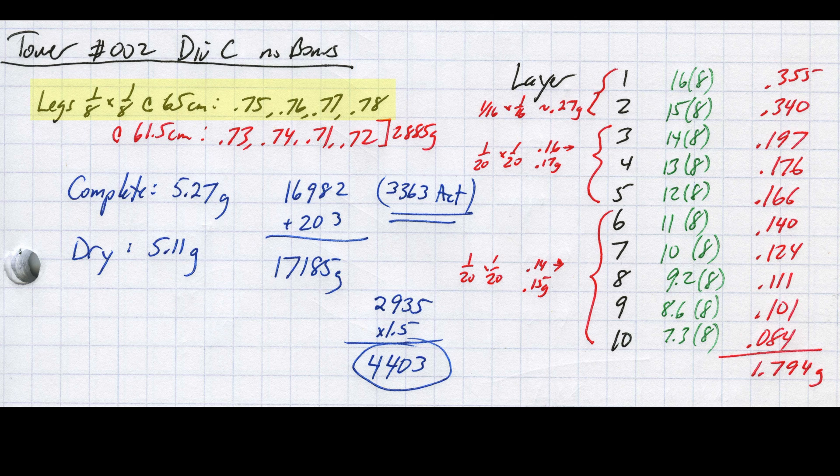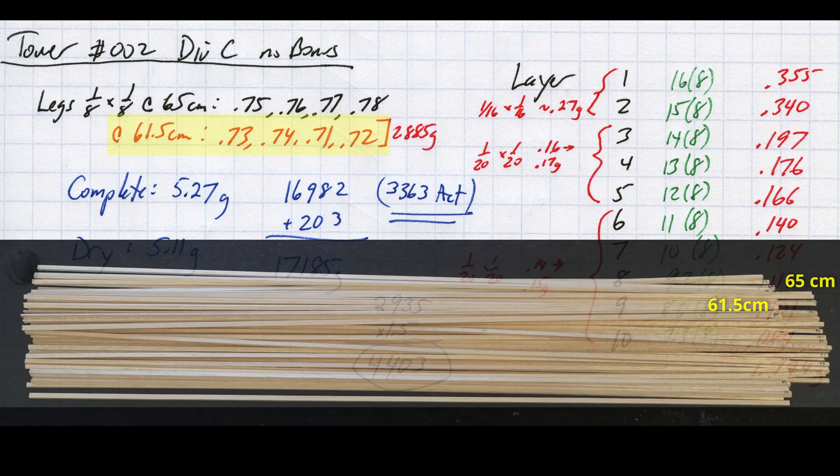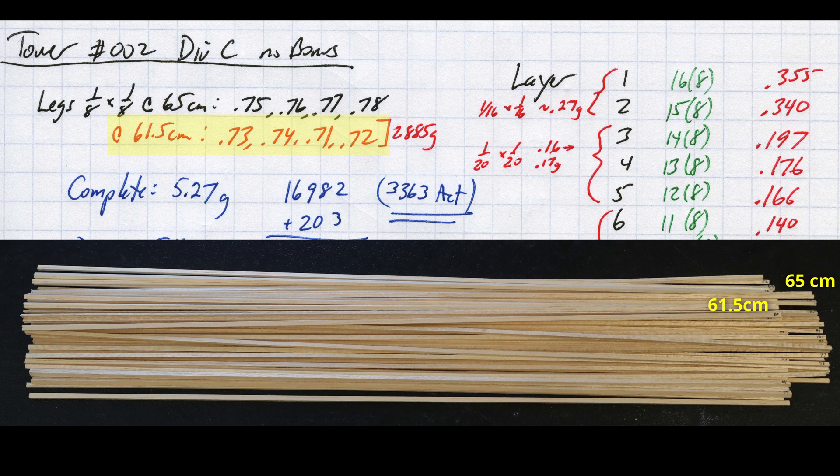In black ink I have the masses recorded at 65 cm, and in red I have the masses recorded at 61.5 cm. That just means when I started building these towers, I originally cut all the potential legs longer than necessary at a standardized length of 65 cm. Later I started cutting the raw material directly to 61.5 cm, so in some of my notes you won't see the 65 cm mass.